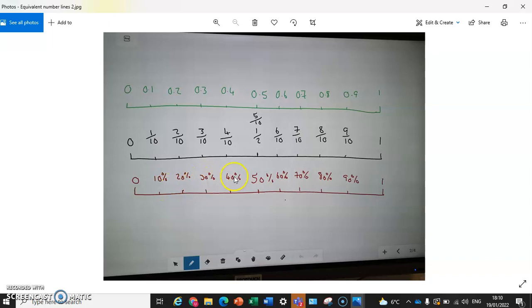Here's 10%, 20, 30, 40, 50, 60, 70, 80, 90%, and then you have 100% down here. Again, our decimal number line up here, we took a half, 0.5 is a half. They all line up.